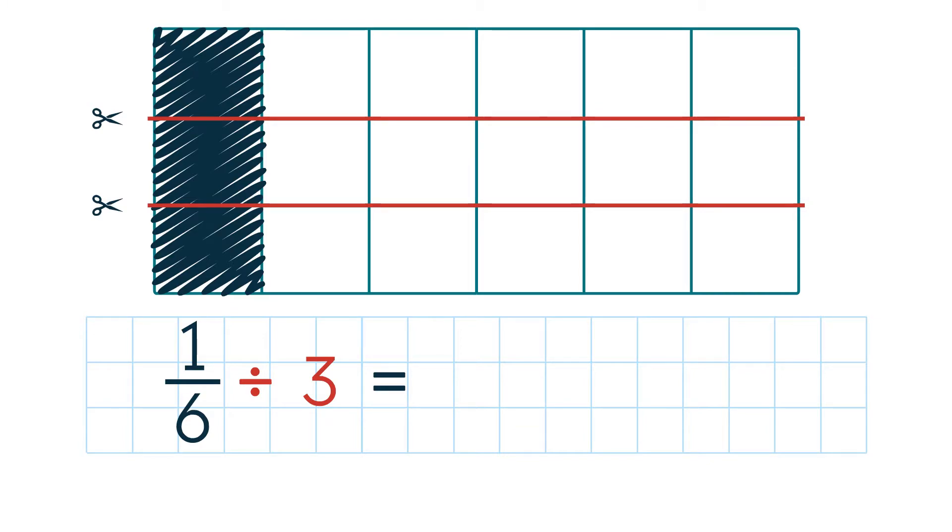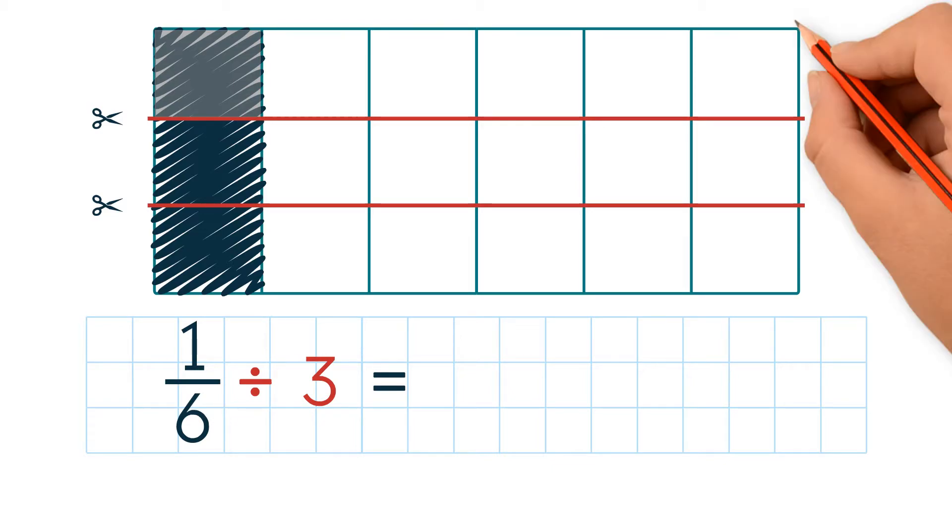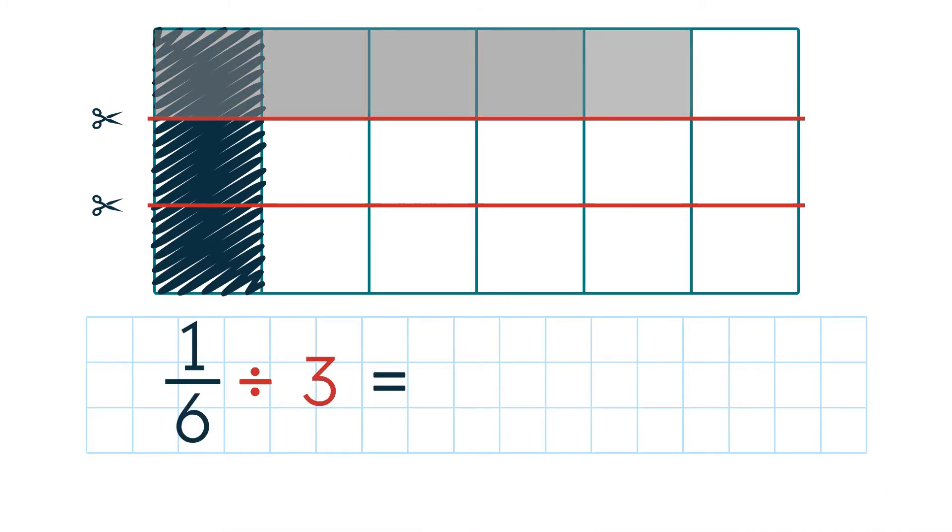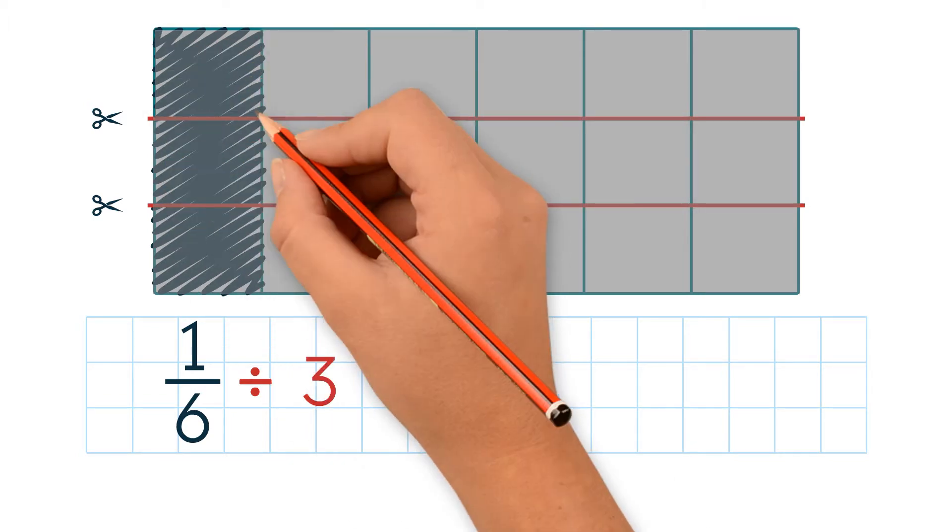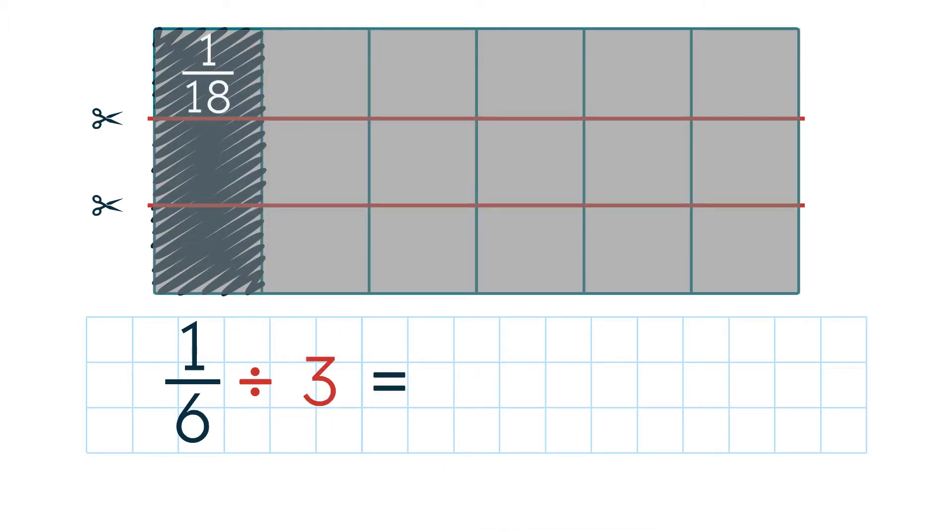Our shaded part, 1 6th, gets divided into 3 equal parts. And one of these parts is our final answer, because 1 6th is divided by 3. As you can see, instead of 6 equal parts, now we have 18 equal parts, because we divided. So 1 of the 3 divided parts is 1 over 18.